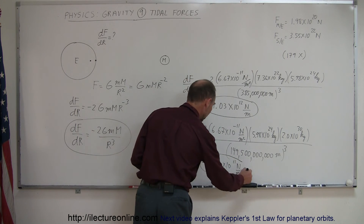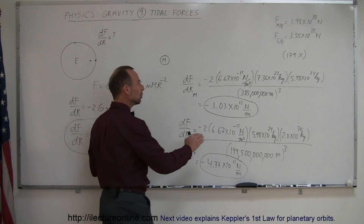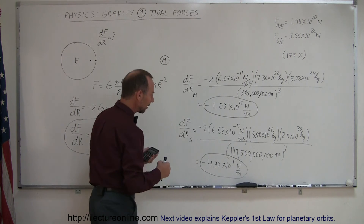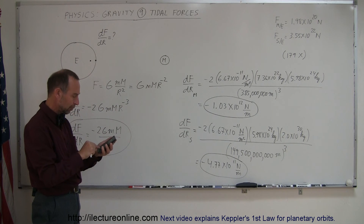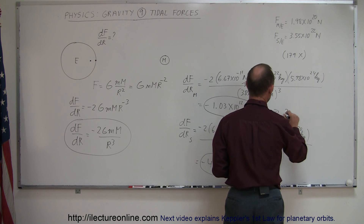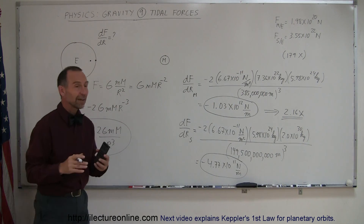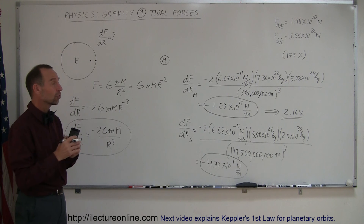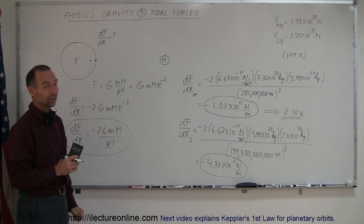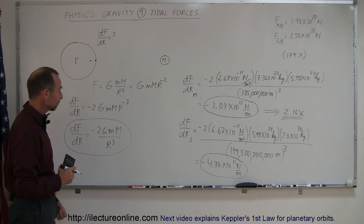Notice that the change of force with respect to distance for the Sun is smaller than it is for the Moon. That's the key as to why the Moon has a stronger influence on the tidal forces compared to the Sun. The ratio is about 10.3 divided by 4.77, which equals 2.16. So the Moon's tidal effect is 2.16 times as large as that of the Sun — that's why the tidal forces are the way they are on Earth. Kind of interesting, that's how that works.